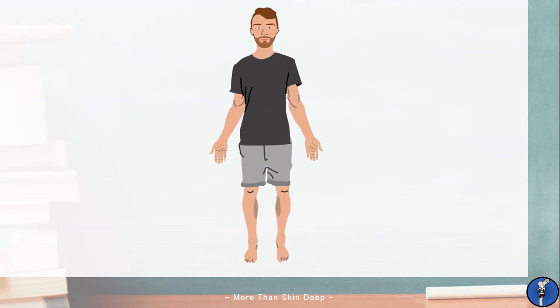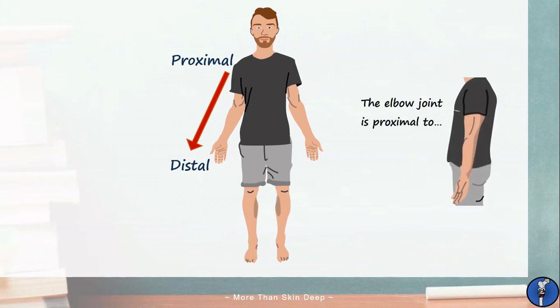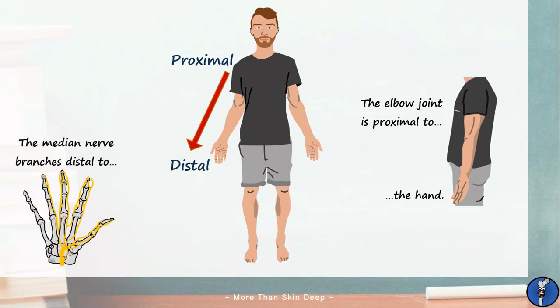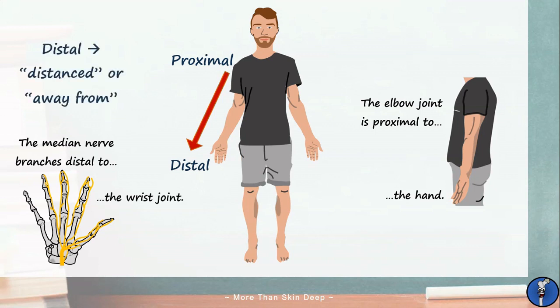Next, we have some more specialised anatomical terminology. These are the words proximal and distal. We use these when considering how something is related to a structure's origin. For example, if we consider the start of the arm to be the shoulder, the elbow is situated more proximal to the shoulder than the hand is. We commonly use the words proximal and distal when talking about the branches of nerves, veins, or arteries. For example, we can say that the median nerve in the hand branches distal to the wrist joint. The word distal comes from distanced, meaning away from, and proximal comes from proximus, meaning close to.